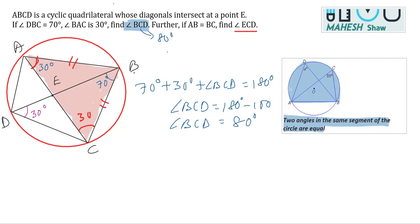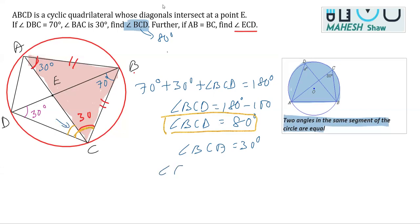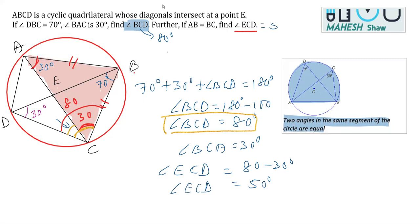Now we need to find angle ECD. We already found angle BCD as 80 degrees, and angle BCA as 30 degrees. Angle ECD can be obtained by subtracting: from the full angle BCD of 80 degrees, we subtract angle BCA of 30 degrees. Therefore angle ECD equals 80 minus 30, which is 50 degrees.